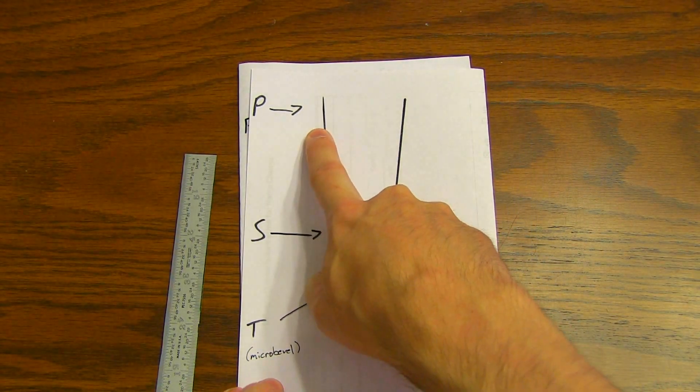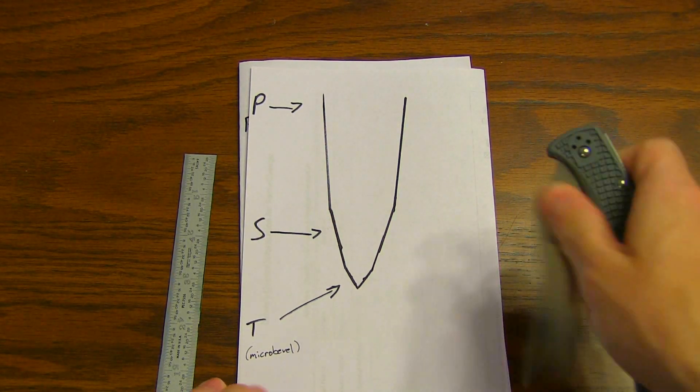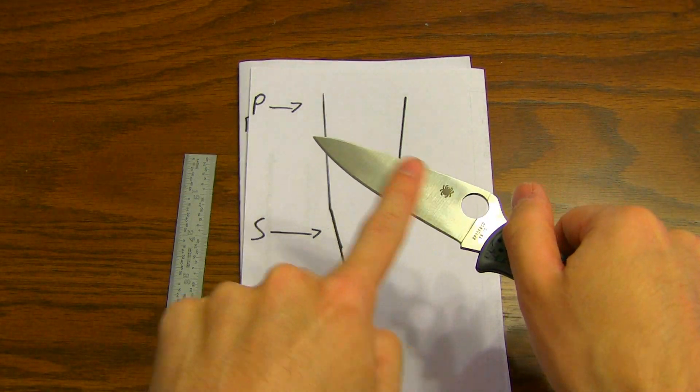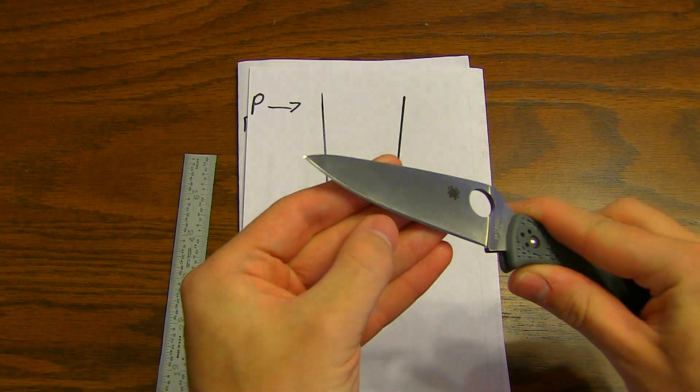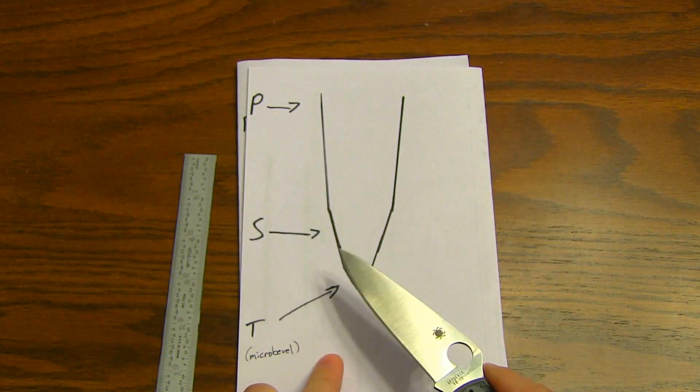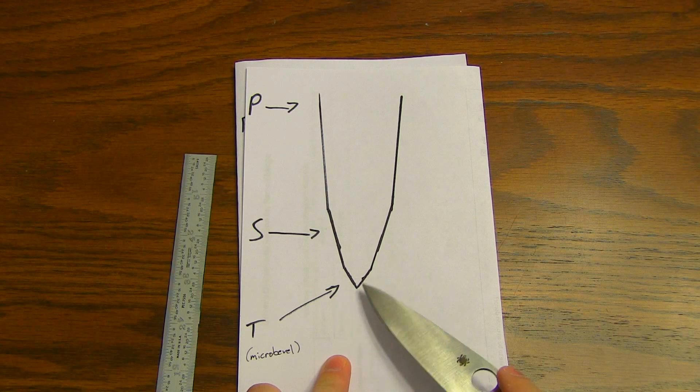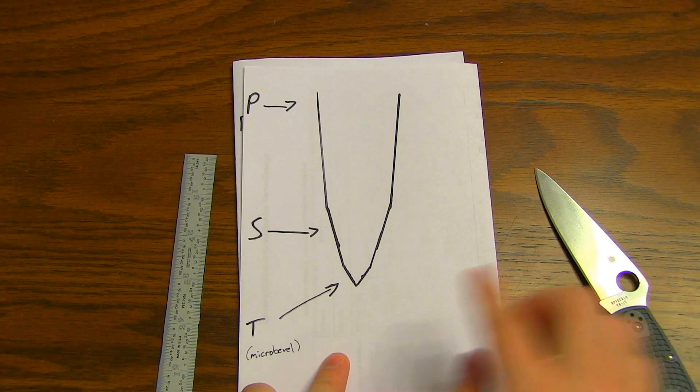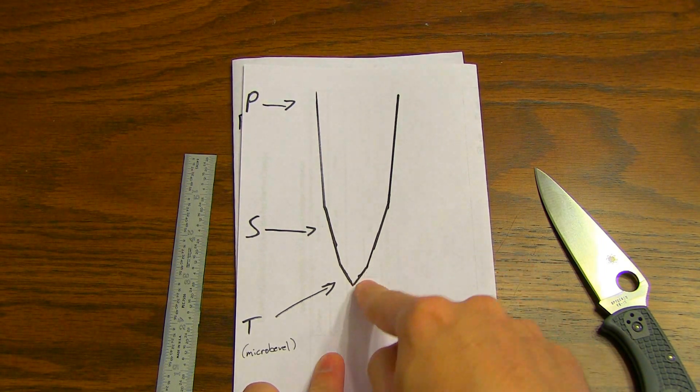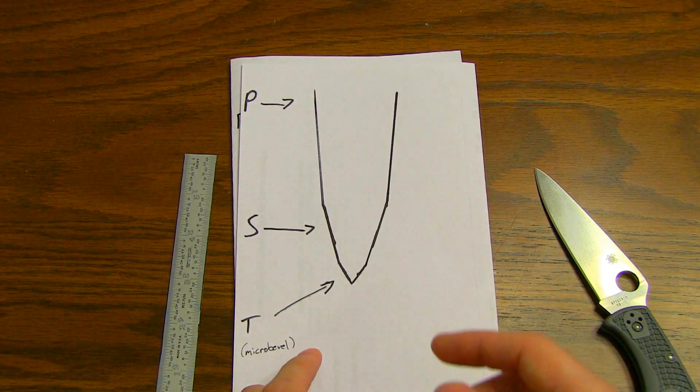So you have your primary grind up here, which is just the grind of the knife, in this case flat. You have your secondary, which is the shiny part, just the edge bevel. And then you have a tertiary. This is on a microscopic level, this is zoomed up. You have yet another edge angle that's even steeper than this to add strength. And that's essentially what a micro bevel is.